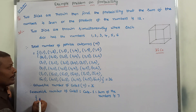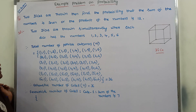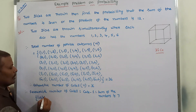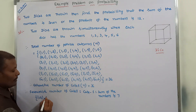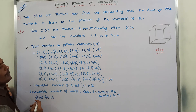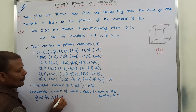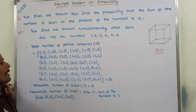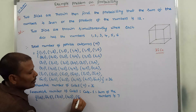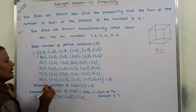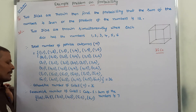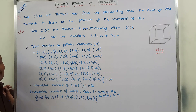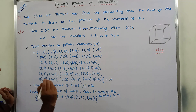Among the 36 possible outcomes, we identify the ordered pairs whose sum is 7. Those are: (1,6) since 1+6=7; (2,5) since 2+5=7; (3,4) since 3+4=7; (4,3) since 4+3=7; (5,2) since 5+2=7; and (6,1) since 6+1=7. So 6 ordered pairs satisfy Case 1.